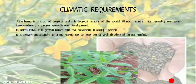Climate: Sunhemp is a crop of tropical and subtropical regions of the world. Plants require high humidity and warm temperature for proper growth and development. In North India, it is grown under rain-fed conditions in the Kharif season. It is grown successfully in areas having 60–100 cm of well-distributed rainfall.